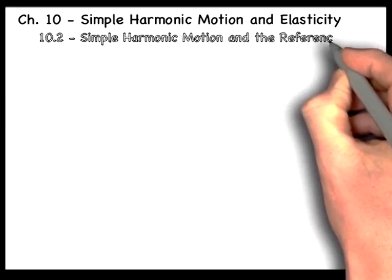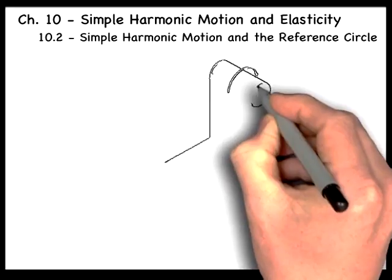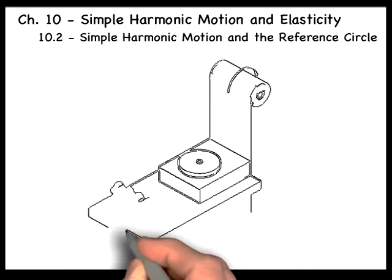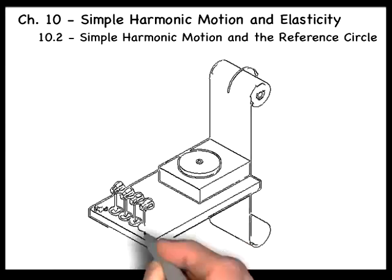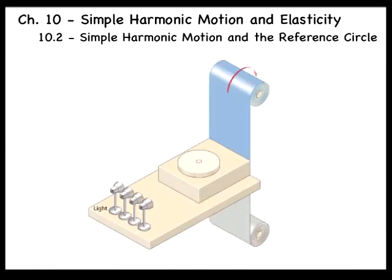In this section we discuss simple harmonic motion and the reference circle. Simple harmonic motion can be described in terms of the displacement, velocity, and acceleration.